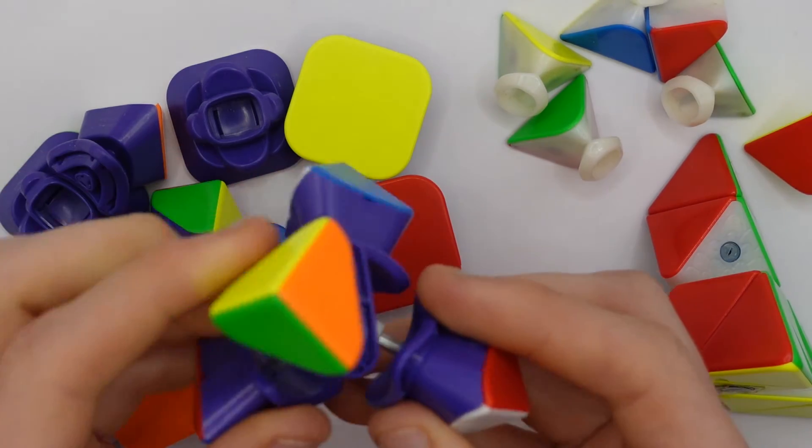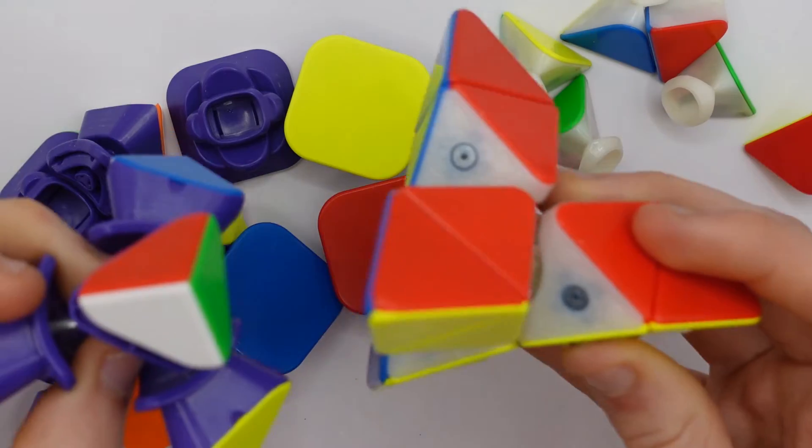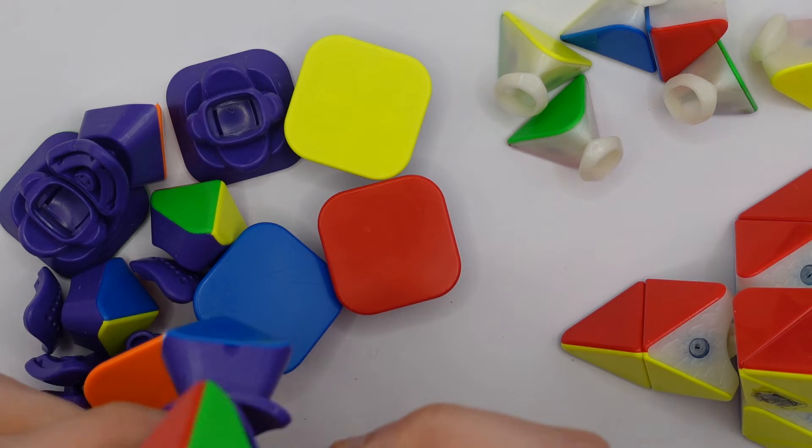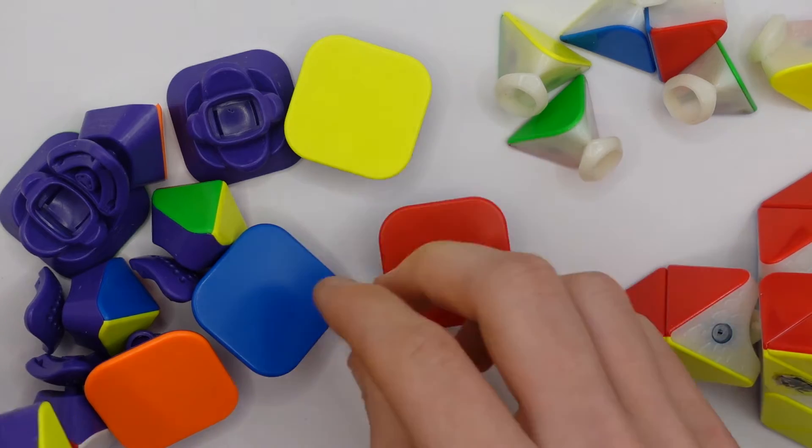You see, these corners on a Skew are the fixed corners. There are four of them. There are four of them on a Pyraminx. So a Skew is the same in this regard.